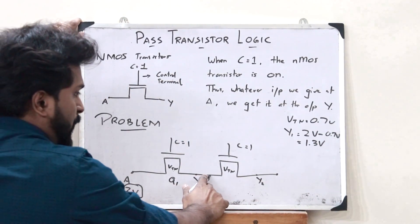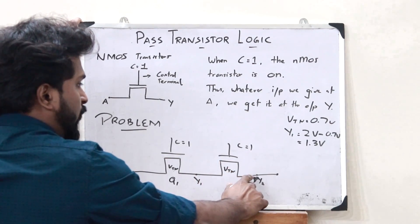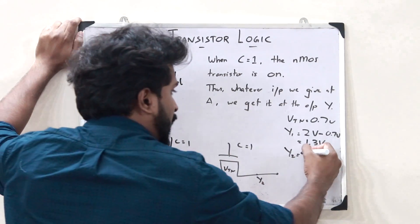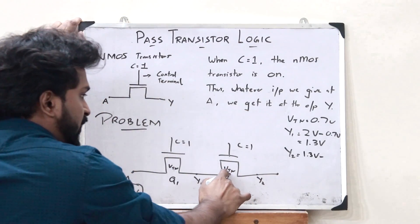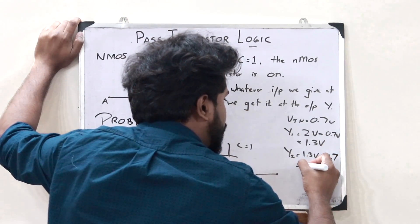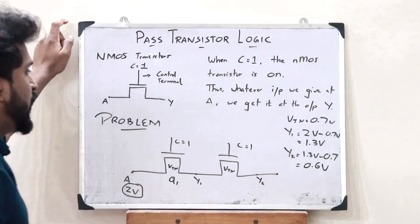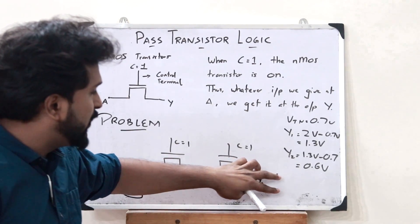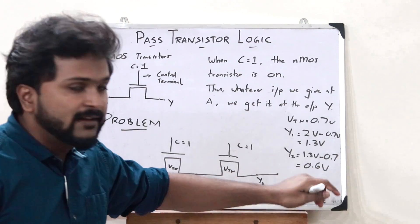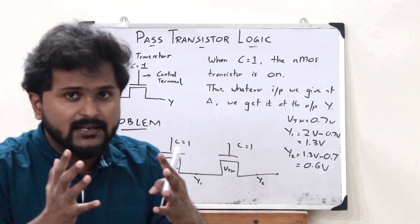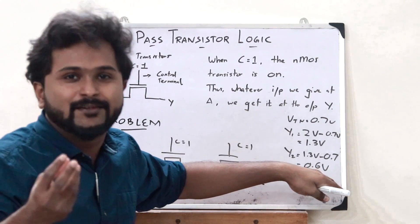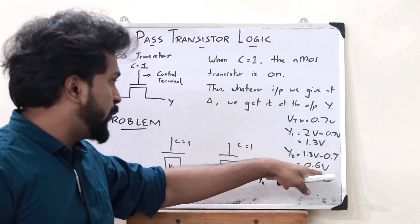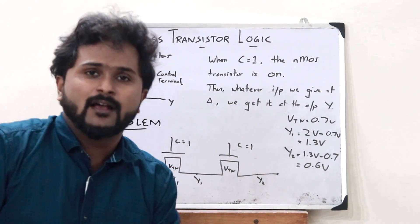Now when this 1.3V goes into the second transistor, the output Y2 equals 1.3V minus VTN, that is 0.7V, giving 0.6V. So in reality, when we give 2V input, we expect 2V at the output, but we are only getting 0.6V. The voltage diminishes from 2V to 0.6V — that is the only problem with the pass transistor logic.